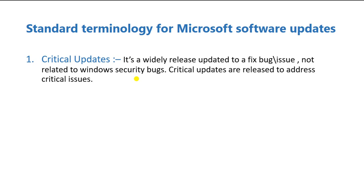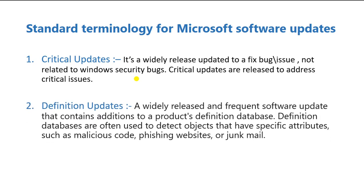A Definition Update is a widely released or frequent software update that contains additions to a product's definition database. Definition updates are released for Windows Defender ATP — the antivirus integrated with SCCM. They can release daily to update the antivirus client to address malicious phishing websites, junk emails, malware, and other antivirus-related issues.